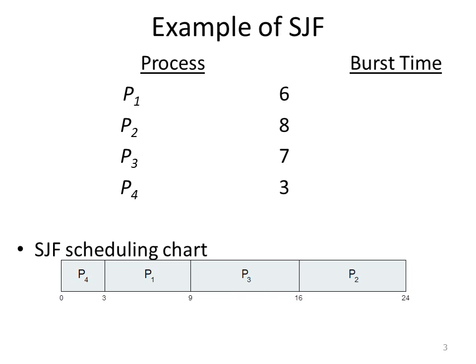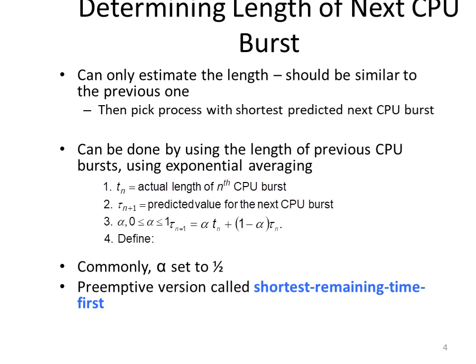The disadvantage of this method is knowing the length of the next CPU burst cycle. The advantage is that it is easily used in long-term scheduling. The next CPU burst is generally predicted by an exponential average of the measured length of previous CPU burst cycles, as shown in slide 4. It is defined with the formula having tau and tn, where tau n plus 1 is the predicted value of the next CPU burst cycle. Normally we consider alpha equal to half, and the formula is shown in step number 3.